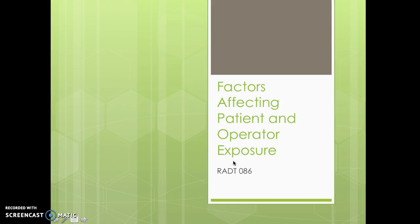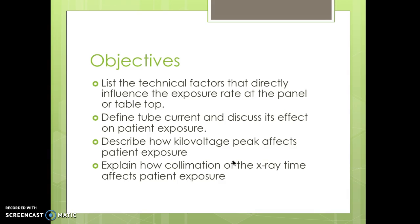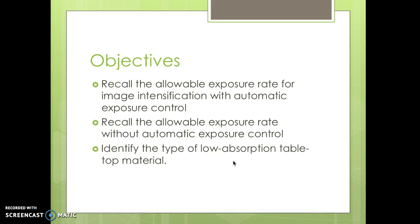Factors affecting patient and operator exposure for your fluoroscopy class. Some of the objectives we're going to look at: list the technical factors that directly influence exposure rate at the panel or tabletop, define current and tube current and discuss the effects on patient exposure, describe how kilovolts peak affects patient exposure, explain how collimation of the x-ray beam affects patient exposure, and recall the allowable exposure rates for image intensification with ABC.